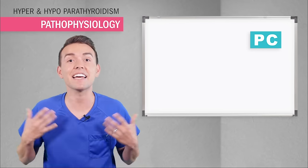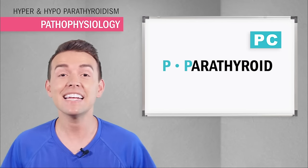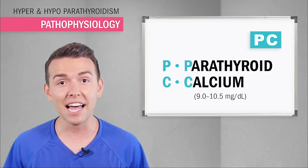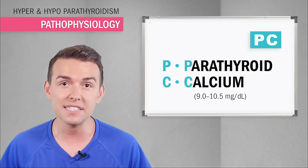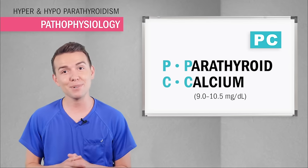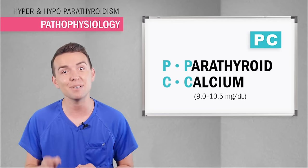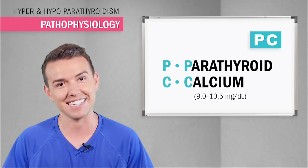The parathyroid glands are almost exclusively responsible for the regulation of blood calcium. So think PC, like a computer — P is for parathyroid and C is for calcium. The normal levels are typically 9.0 to 10.5; however, some books will say 8.5 to 10.0, so be sure to know what your textbook says.